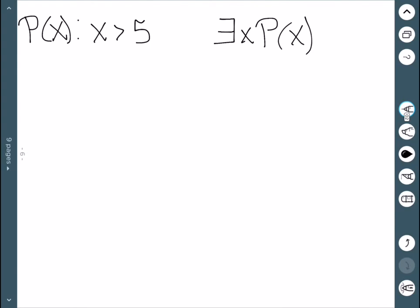Let's do some examples. If P(x) stands for x > 5, we say there exists an x such that P(x). This is true since we can think of a number greater than 5. There are lots of numbers greater than 5, but we just need at least one to make this true.